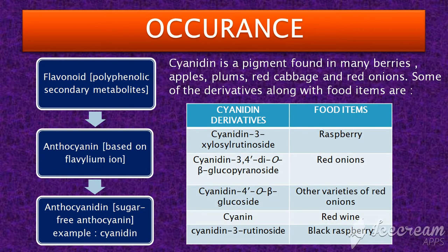The general class of cyanidin is flavonoids, which are 15-carbon skeleton compounds having multiple phenolic groups. They are secondary metabolites, i.e., not directly involved in growth, development, and reproduction of plants. Anthocyanidins are flavonoids which are synthesized via the phenylpropanoid pathway and contain sugar.